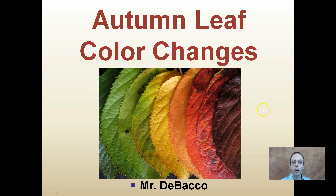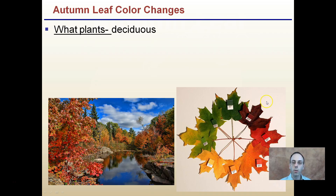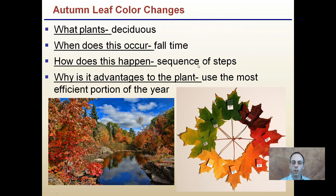What's going on in the leaves through this process? To start, what plants do this? Not all plants go through this color change. Deciduous trees are the ones that go through this — they're the ones that drop leaves in the fall time. When does this occur? This is the fall time, or autumn.